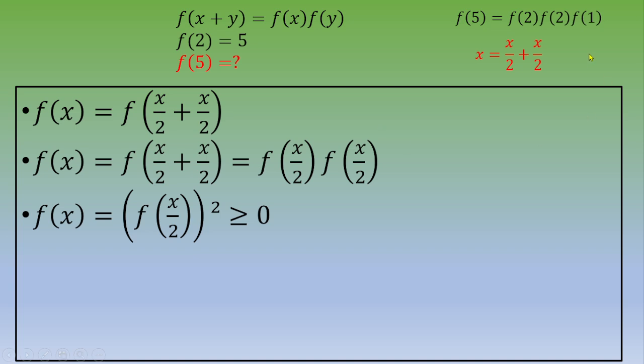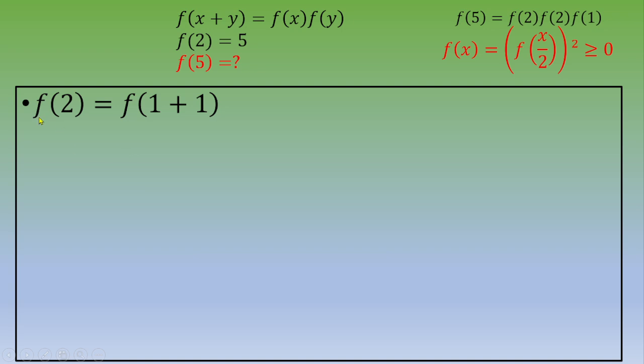So we would like now to know the value of f of 1. The idea is to write down that f of 2 is f of 1 plus 1. According to the property of this function, f of 2 equals f of 1 squared, and we know that this is 5. According to what we just said, there is just one single solution: f of 1 equals square root of 5.